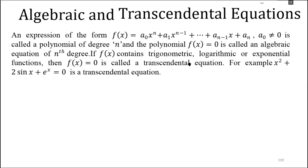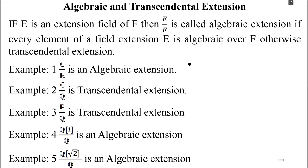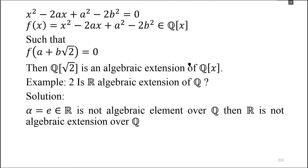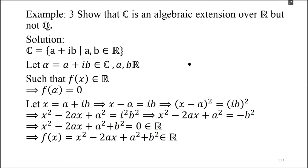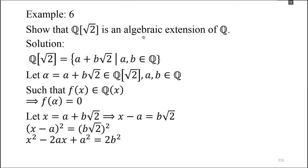Now you will understand what an Algebraic number is. I have learned what Algebraic number and Transcendental number are. Now we will move towards our topic, that is Algebraic and Transcendental Extensions, which we were discussing yesterday. We have said that Q(√2) is an Algebraic extension of Q. So, what is the Algebraic extension of Q?